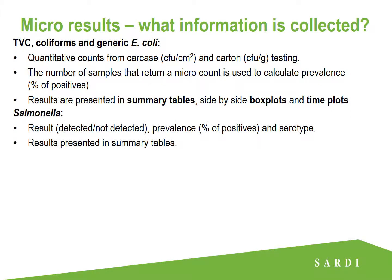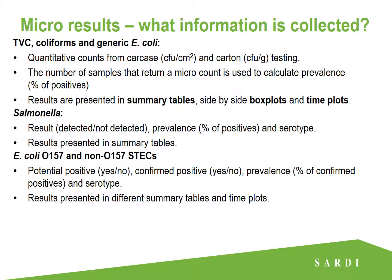For Salmonella, we just get a result — either a detect or not detected. We also get prevalence, the percentage of positives, and serotype information, and this result is just presented in summary tables. For our E. coli O157 and non-O157 STECs, we get potential positives, confirmed positives, and prevalence of confirmed positives, as well as serotype information, and these results are presented in a different type of summary table along with some time plots.